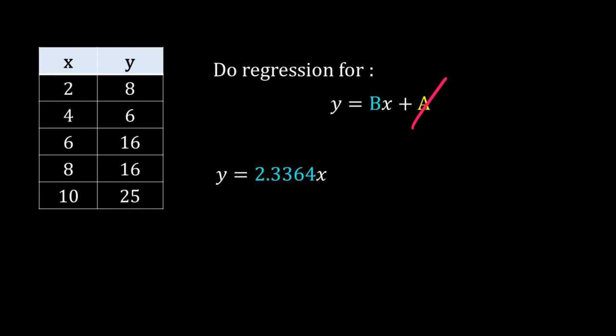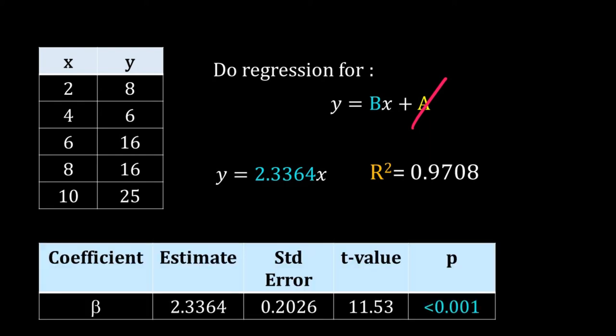I performed the regression with the new model, and here is the result. With this new regression, the slope is 2.3364 and the R-squared is 0.9708. So the R-squared has improved and the t-test also gives better results.